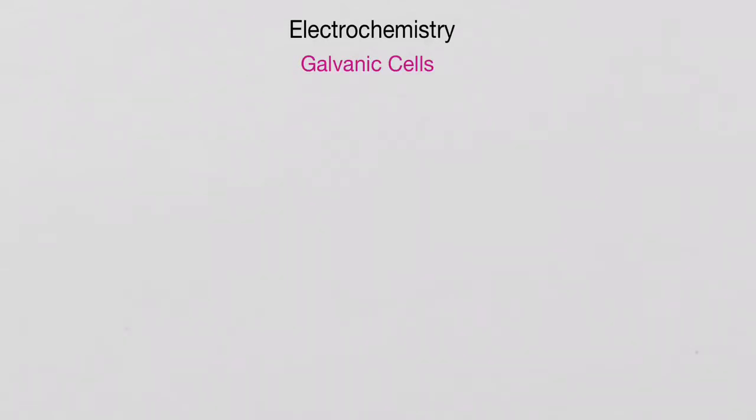In this video, we're going to look at galvanic cells in a little bit more detail. The specific galvanic cell that we are going to look at today is the nickel-copper galvanic cell. Remember, a galvanic cell is made up of two beakers and we've got our salt bridge in the middle.